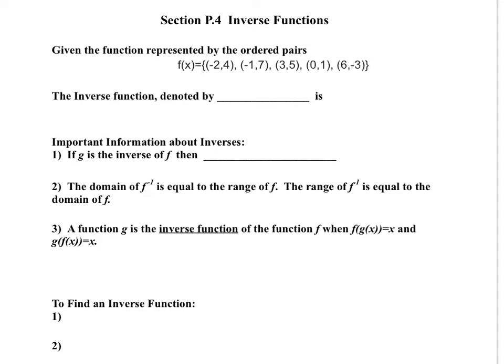So given the function represented by the ordered pairs — you can see that I've listed down a set of ordered pairs — f of x is equal to: negative 2, 4; negative 1, 7; 3, 5; 0, 1; and 6, negative 3. The inverse function is going to be denoted by the notation f to the minus 1 of x, which stands for the inverse function of f. An inverse function is simply a reflection over the line y equals x, so for every ordered pair in the original function, to find the inverse function all I need to do is reverse the x and y coordinates.